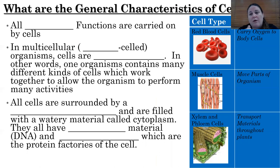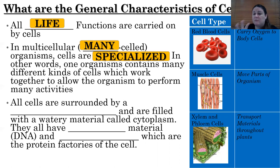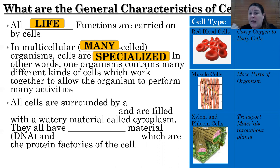Let's talk about the general characteristics of cells. All life functions are carried on by cells, and in multicellular organisms, cells are specialized — meaning they might look different, act different, and carry on different jobs. One organism is going to contain many different kinds of cells which work together to allow organisms to perform many activities. You see some different cell types on the right — red blood cells and muscle cells found in humans look different and do different functions. All of our cells in our body have an identical copy of DNA, but by utilizing different chunks of that DNA, they're designated different jobs and can perform different roles.